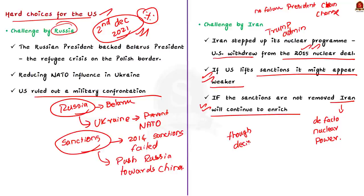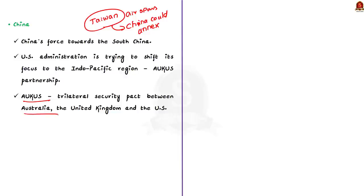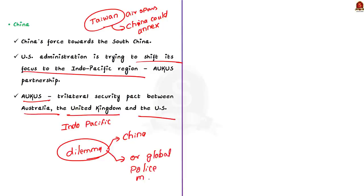Finally, China. China is sending its military aircraft over the air defense identification zone of Taiwan, indirectly signaling it could take over Taiwan by force. The United States is focusing more on the Indo-Pacific to contain China's rise. This is evidenced by the AUKUS partnership — a trilateral security pact between Australia, the United Kingdom and the United States. The Afghan withdrawal and the downsizing of troops in West Asia suggest America's strategic focus has shifted towards China. The dilemma is: should the United States focus on China for the next bipolar contest, or continue to act as a global policeman of the liberal order that is under attack from multiple fronts?